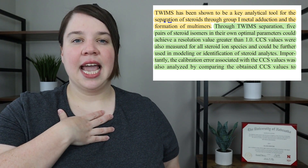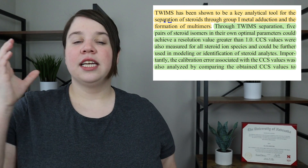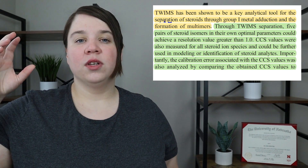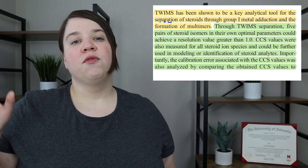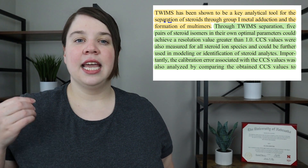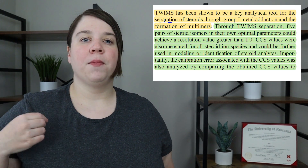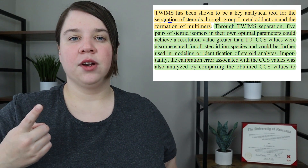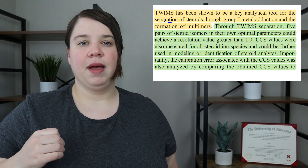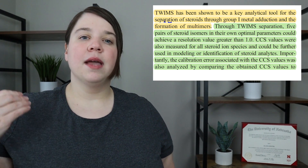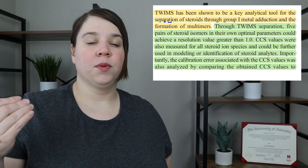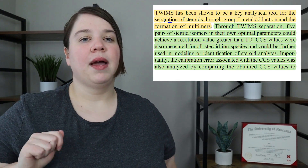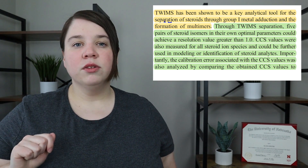If I'm trying to make the case that steroids can be separated by different group one metals for a dimeric species, then I'm going to want to put: what was the resolution of certain steroids as separated by certain metals? Were we able to achieve a full separation for each of our steroid isomer pairs? Those are going to be my key conclusions there.